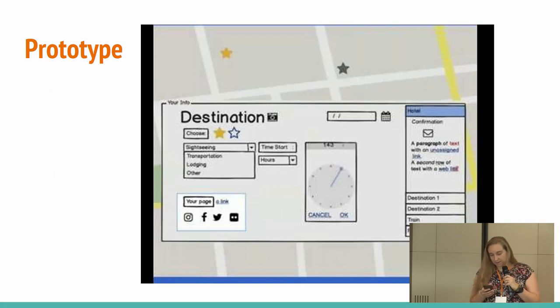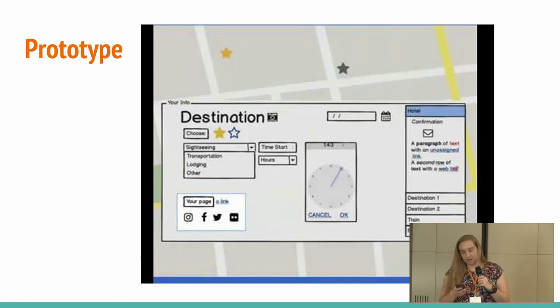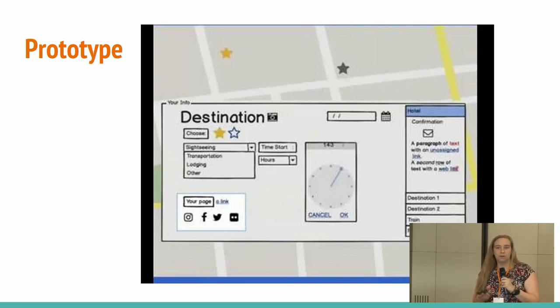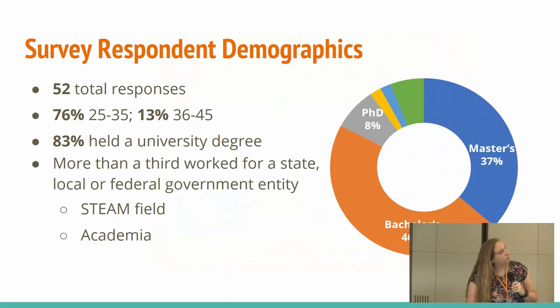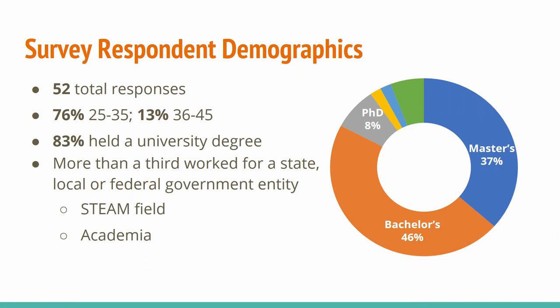Based on our survey data, about 68% said they would recommend a web mapping tool with features like the ones represented in the walkthrough to friends, family, or colleagues to help notify them of their travel plans or to better plan a trip. We evaluated 52 total responses overall. Eight of those people didn't respond to questions regarding the mockup walkthrough; however, we counted those questions where we were able. Of the 52 total respondents, 76% were between the ages of 25 and 35, and if we expand that out to 45, that accounts for about 90% total of respondents we evaluated.